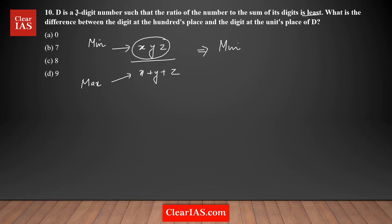It could be any three-digit number — the number could be anywhere from 100 to 999. I'm going to pick some numbers from this range and see what the ratio looks like. Let's take the numbers in the range from 100 to 199.